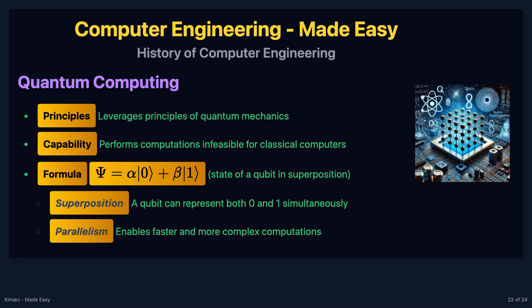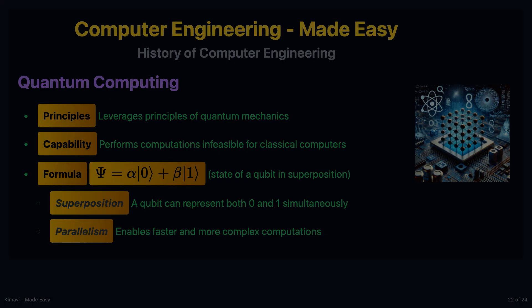Quantum computing leverages the principles of quantum mechanics to perform computations that are infeasible for classical computers. Quantum bits, or qubits, can represent both 0 and 1 simultaneously, enabling parallel processing. The state of a qubit can be expressed as: psi equals alpha times the state |0⟩ plus beta times the state |1⟩.